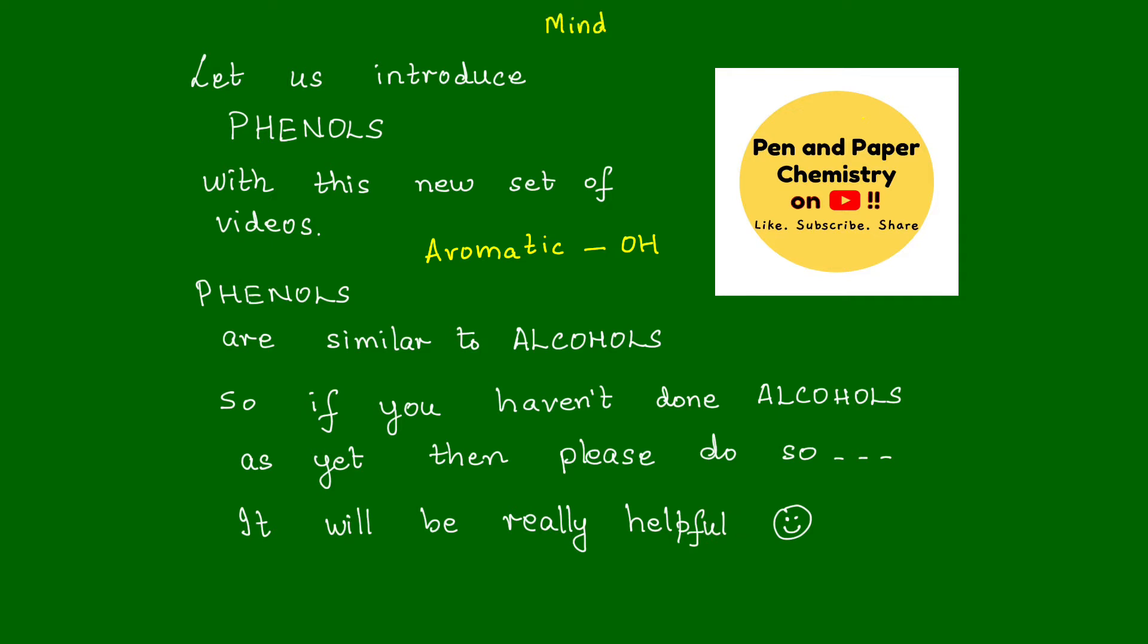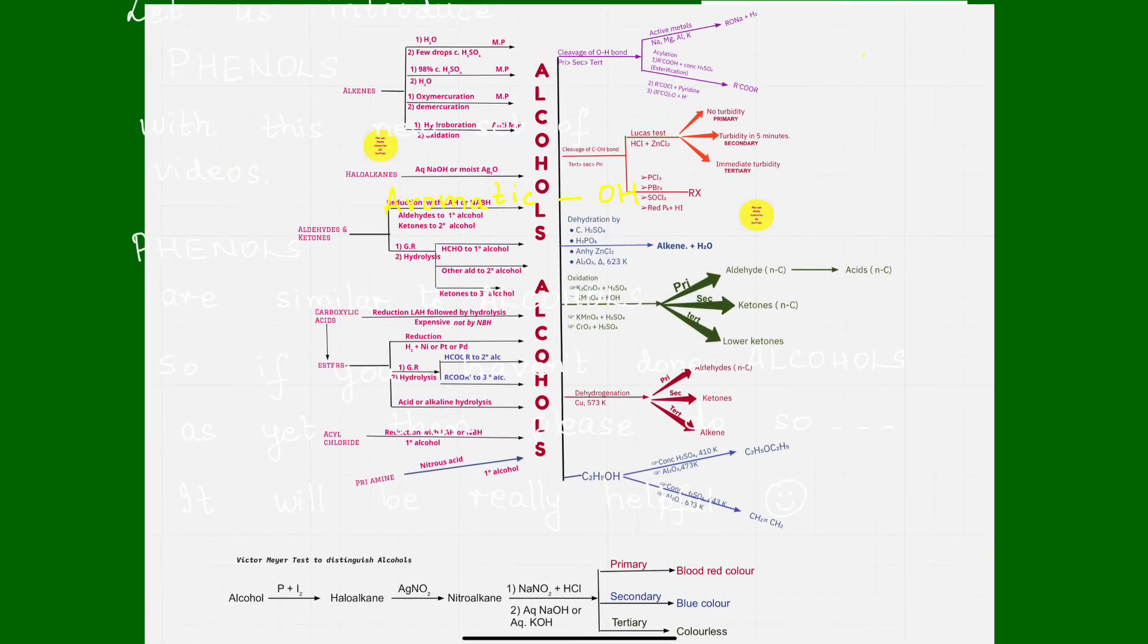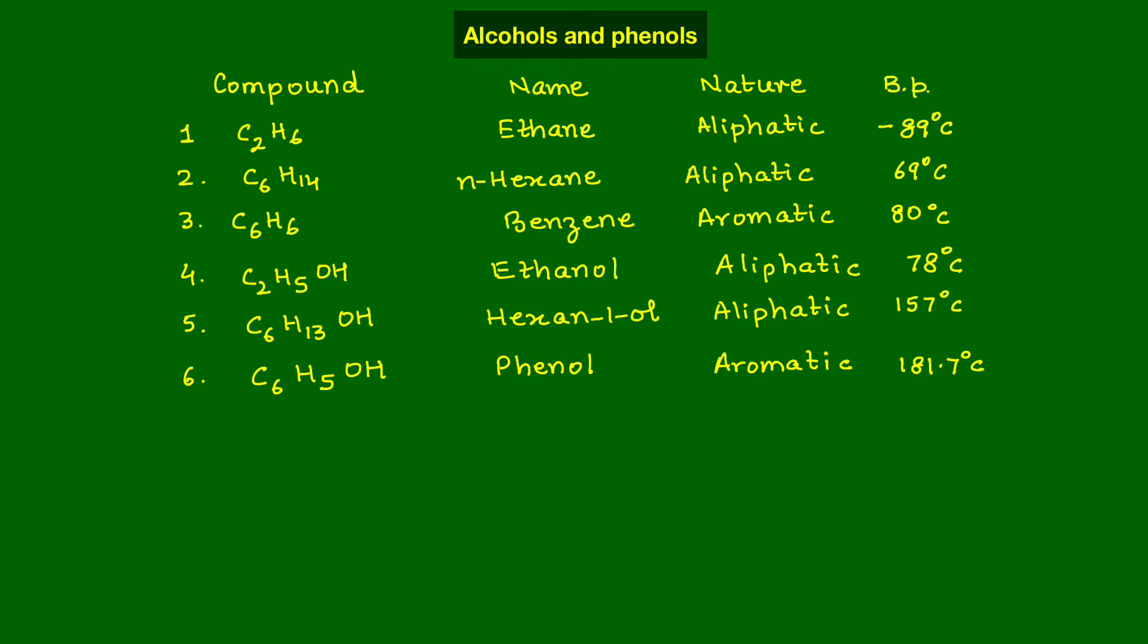There is a mind map which gives you the complete set of properties and the preparation of alcohols. Yes, this is the mind map that I am talking about. If you see the videos on alcohols, you will be able to draw this flow chart yourself. I am going to test the difference between the behavior of alcohols and phenols. So, look at the boiling point. What do you notice over here?